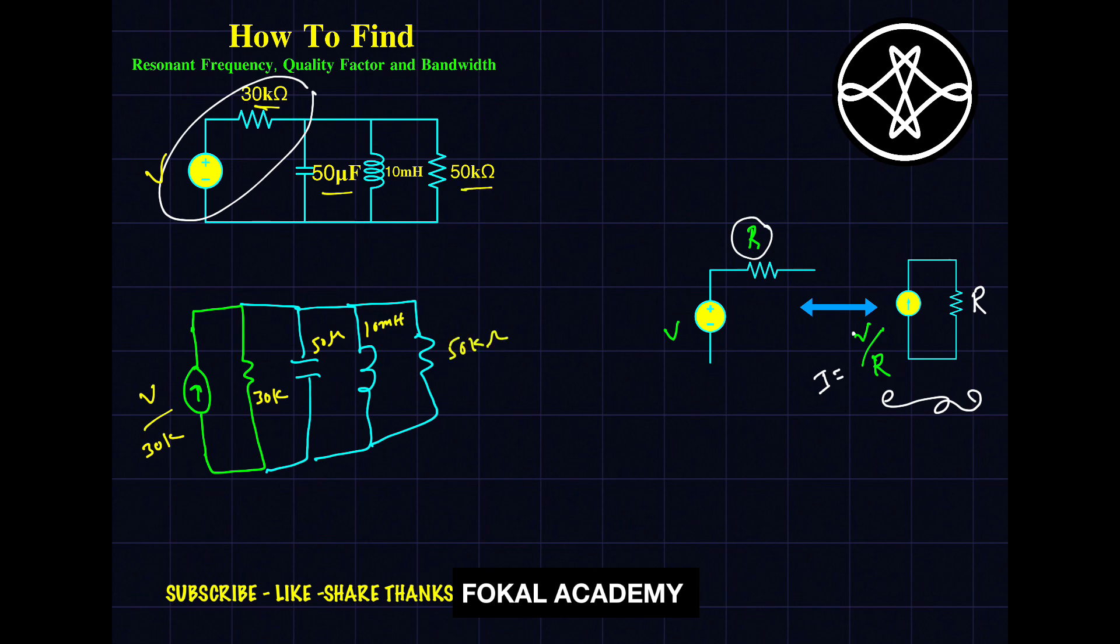Now replace these two components which are in parallel with equivalent resistance. That is 30 kilo ohms in parallel with 50 kilo ohms. So the equivalent resistance R_equivalent is equal to 18.75 kilo ohms.